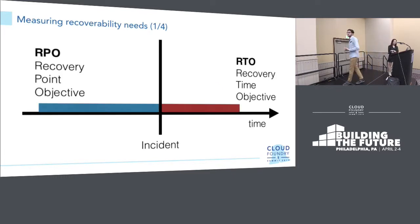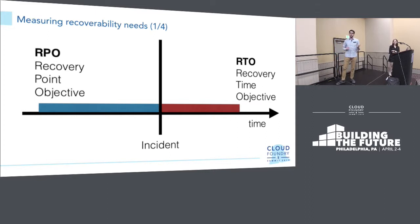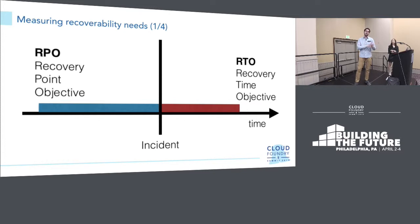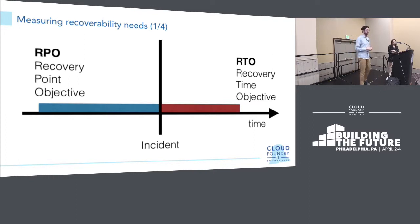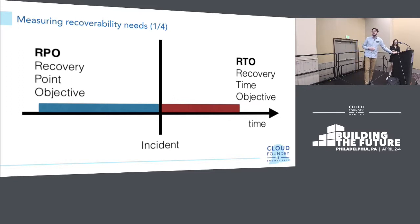Now let's talk about disaster recovery as the second part. We need to measure our disaster recovery requirements. I'll introduce two metrics: RPO, or Recovery Point Objective, which is deciding how far back we want to be able to recover — it's about how granular you want recovery to be. Can you afford to recover to last week's state or yesterday's state? How frequently is your platform changing? And then there's RTO, Recovery Time Objective, which is basically how long does it take for recovery to happen.